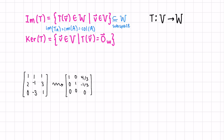The kernel of our transformation, on the other hand, is all the vectors in V such that when we transform them, they land on the zero vector in W. Since we're talking about vectors in our set V, this is a subspace of V — a subspace of our domain — whereas the image is a subspace in our codomain, or the range of the transformation. The kernel of a transformation represented by a matrix is equivalent to the null space of our matrix A.